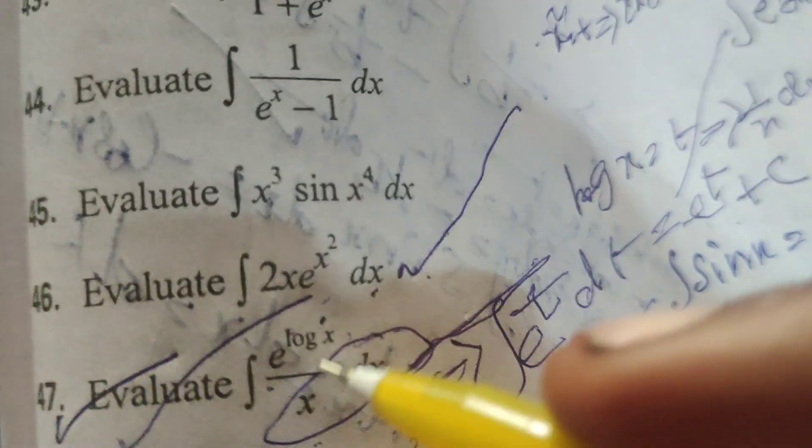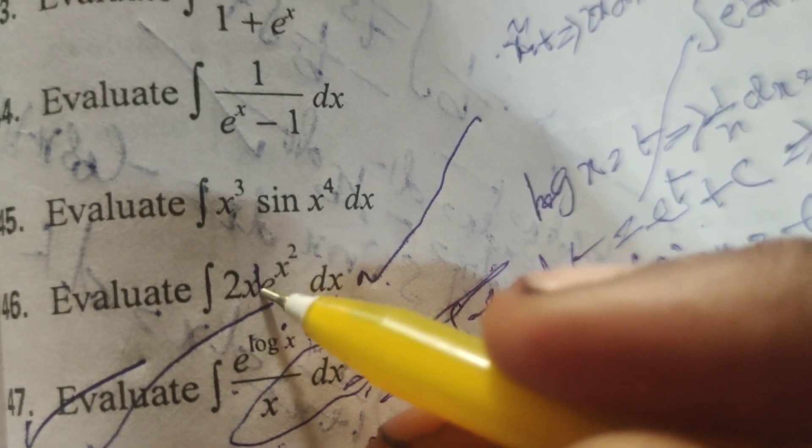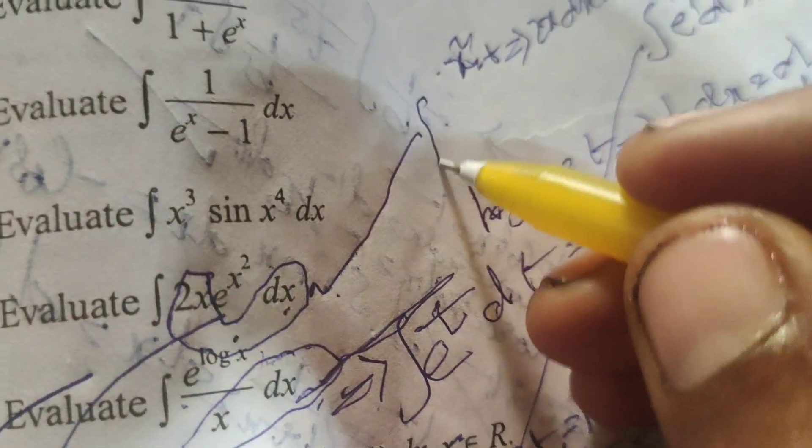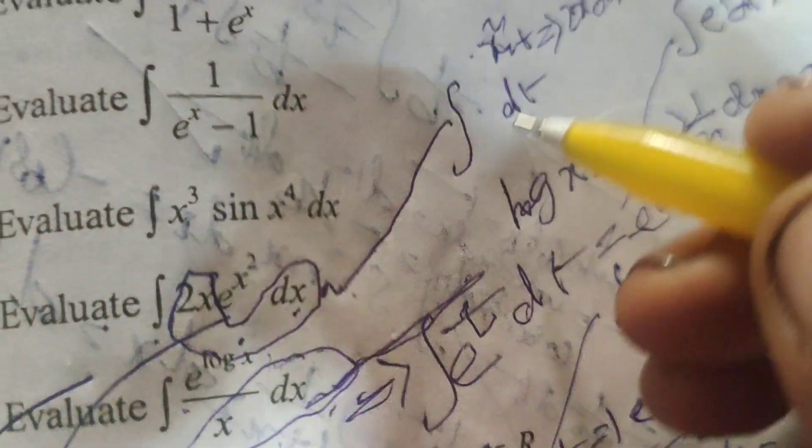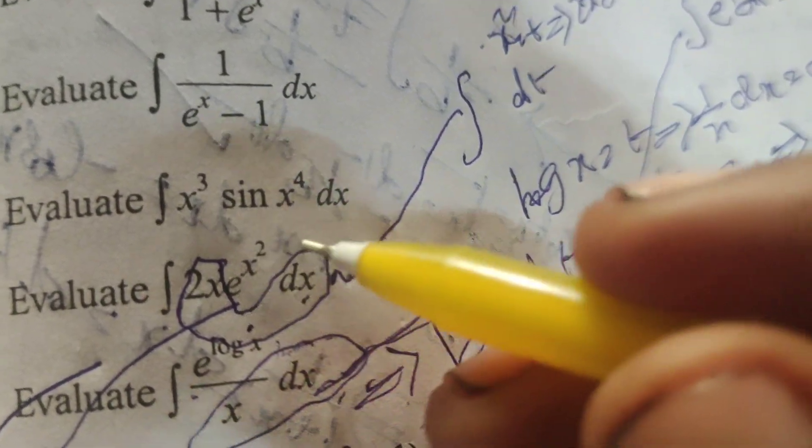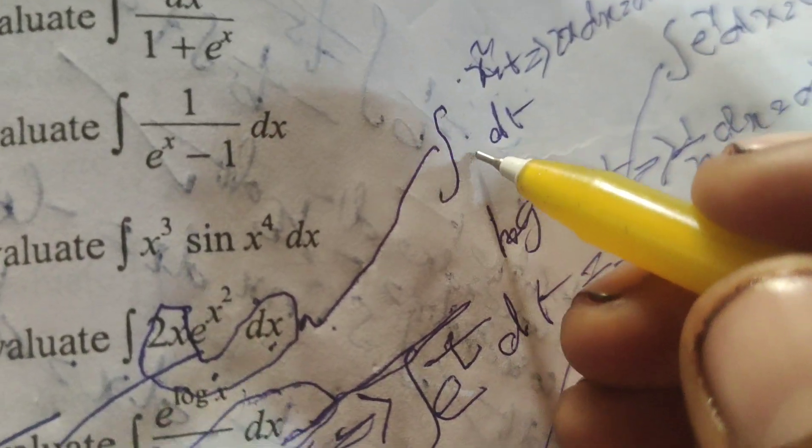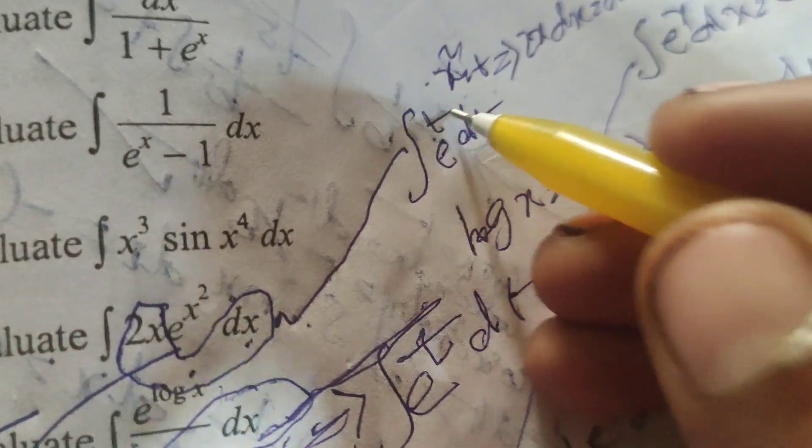Here, in place of 2x dx, substitute dt in this integration. Next, for e^(x²), what is x²? Our substitution is t. Therefore, we have e^t dt.